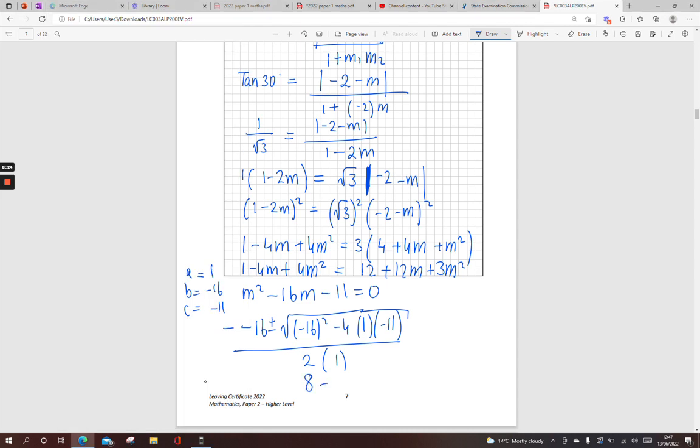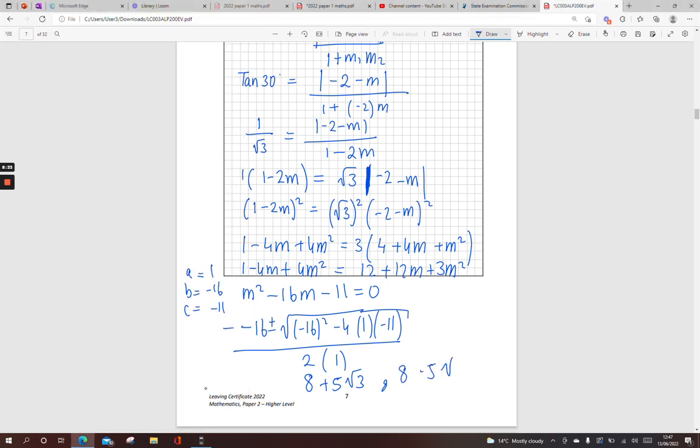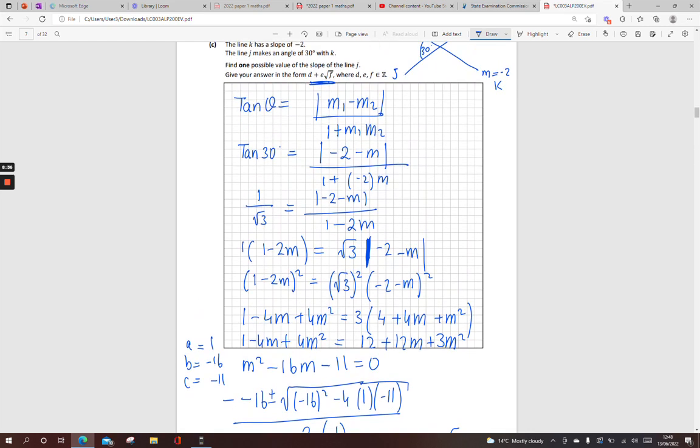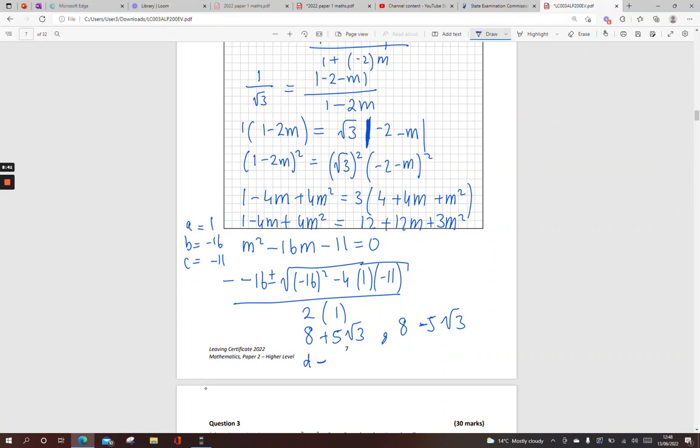8 plus 5 root of 3. I may as well work out the other answer. It says for 1. 8 minus 5 root of 3. Does that look what it's asked for? D plus E root of F. So yeah. D plus E root of F. My D is 8, my E is 5, and my F is 3.